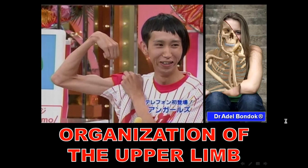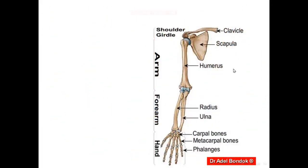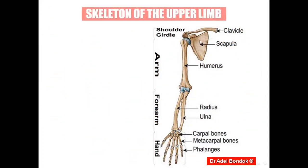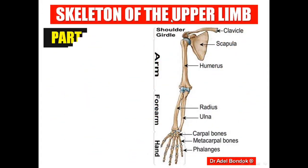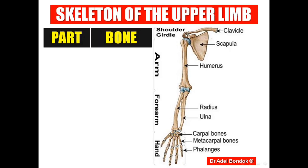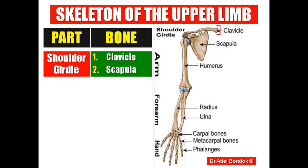Today I will talk about the pectoral region and the axilla. I will start by the organization of the upper limb. Regarding the skeleton of the upper limb, the first part is the shoulder girdle. The shoulder girdle is formed of two bones: the clavicle anteriorly and the scapula posteriorly.